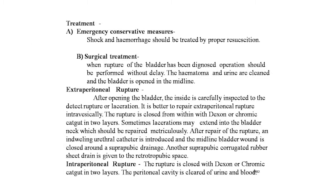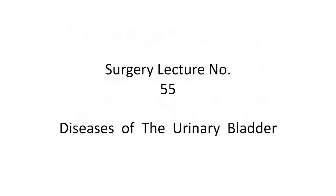Treatment: emergency conservative measures include treating shock and hemorrhage by proper resuscitation. For surgical treatment, once rupture of the bladder is diagnosed, operation should be performed without delay. The hematoma and urine are cleared and the bladder is opened in the midline. For extraperitoneal rupture, the inside is carefully inspected to detect any rupture or laceration; it is better to repair extraperitoneal rupture intravesically, closing the rupture from within with Dexon or chromic catgut in two layers. Sometimes laceration may extend into the bladder neck, which should be repaired meticulously. An indwelling urethral catheter is introduced, the midline bladder wound is closed around a suprapubic drain, and a corrugated rubber drain is placed in the retropubic space. For intraperitoneal rupture, the rupture is closed with Dexon or chromic catgut in two layers, the peritoneal cavity is cleared of urine with lavage.